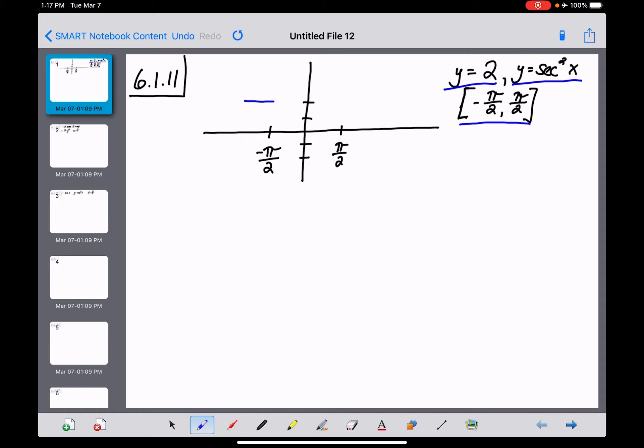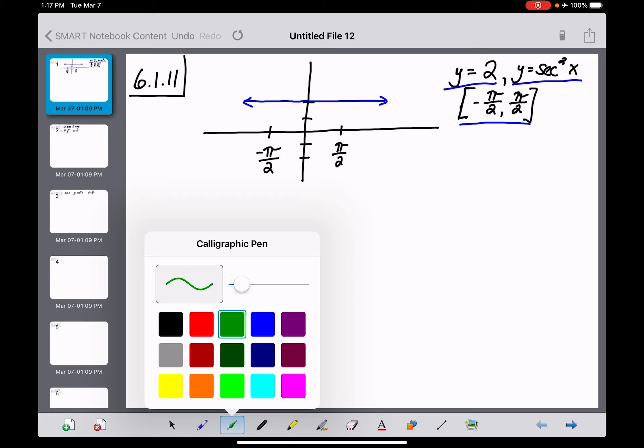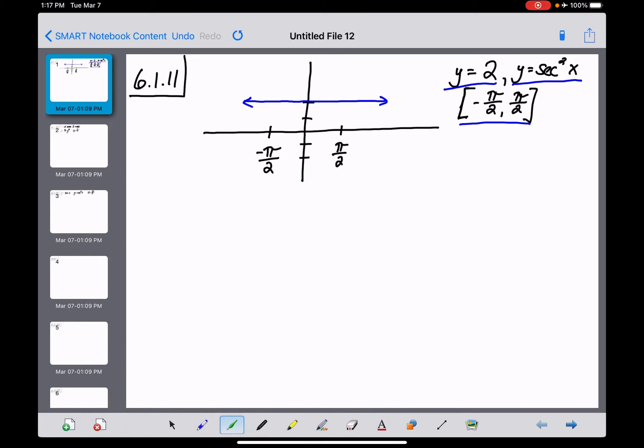First, y equals 2 is just this horizontal line with a y-intercept of 2. Coming up with the graph of secant squared of x might give you trouble, so let's walk through it. If I was trying to graph secant squared by hand, I'd need the graph of secant of x first, and to do that, I'd remember my graph of cosine of x.